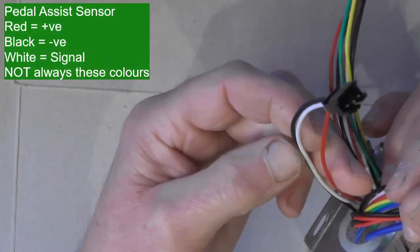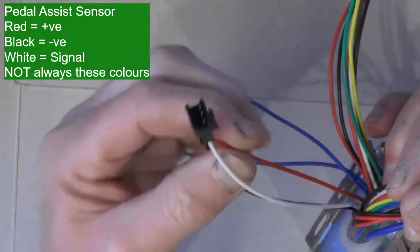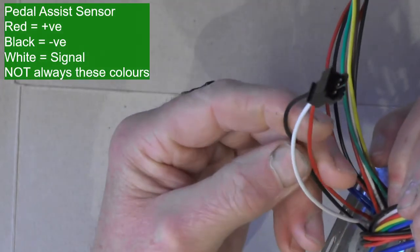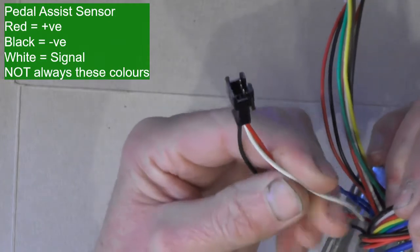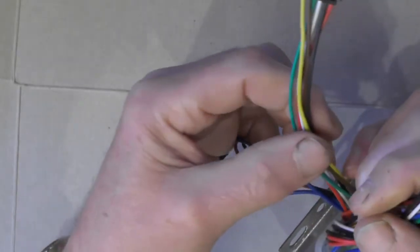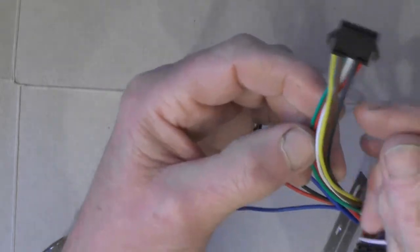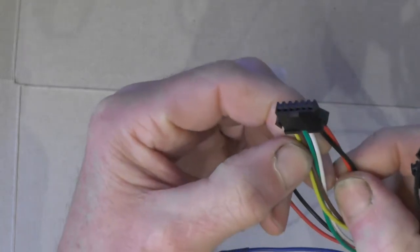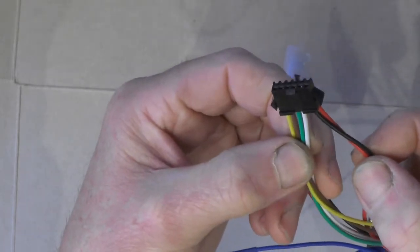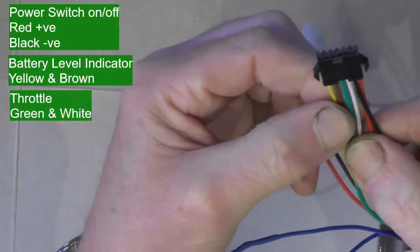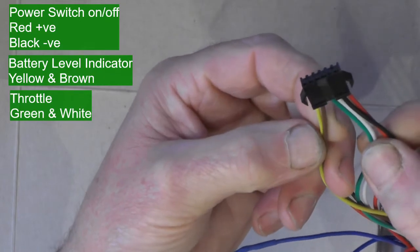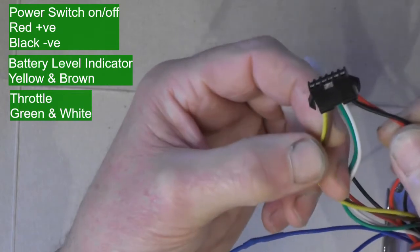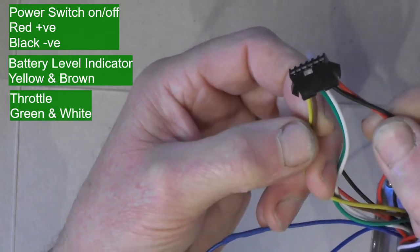Then you've got red, black, and white going to your pedal assist sensor—positive, negative, and a signal wire. In my case, because my throttle matches up with this controller, there's another block of wires here—six wires: red, black, yellow, brown, white, and green. Two of those wires go to the on-off switch, two go to the battery indicator, and two go to the actual throttle potentiometer.